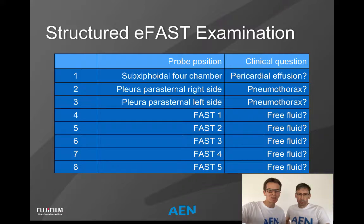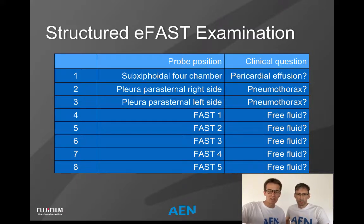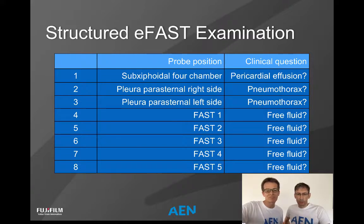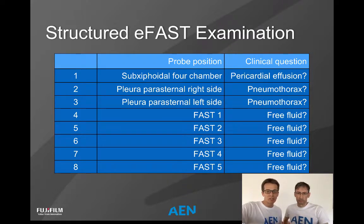Let's have a look at this slide where we have put down the propositions. We have eight different propositions and clinical questions — we will come back to this slide later as a summary. Looking at these eight positions, we first look at the subcostal view for a four-chamber view of the heart for pericardial effusion. Then we have the pleural positions, just beside the sternum on the right side and also on the left side. This is good for exclusion of pneumothorax. We also have five further FAST positions, so eight positions in total.